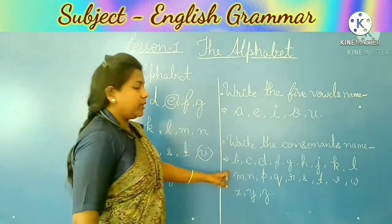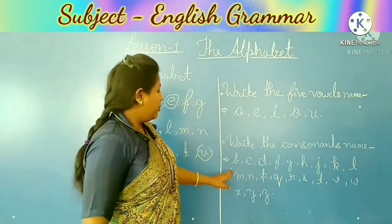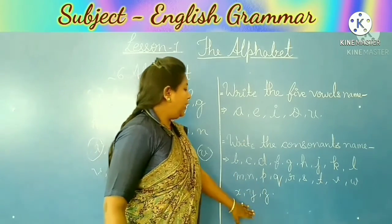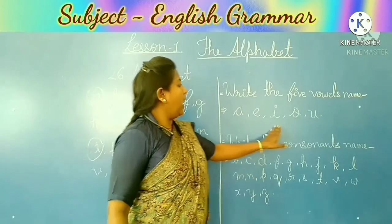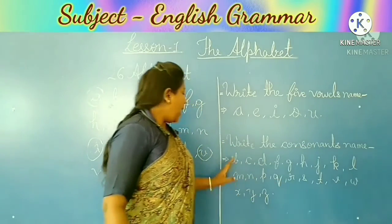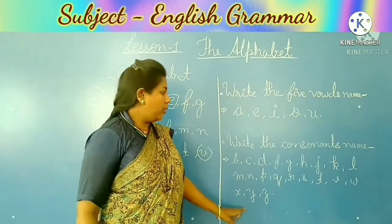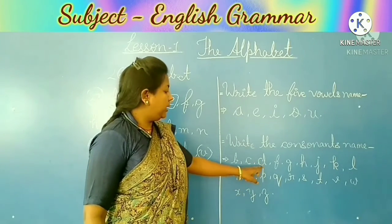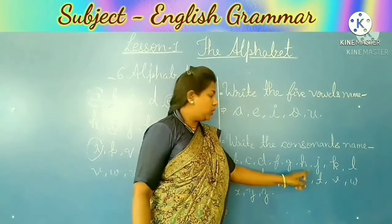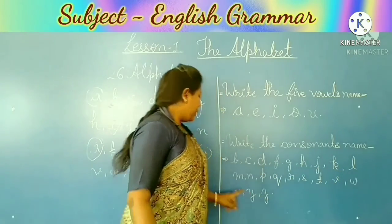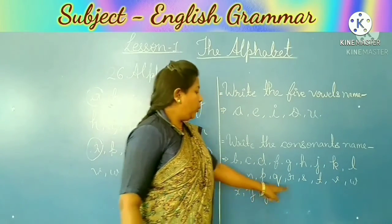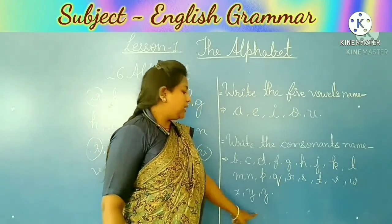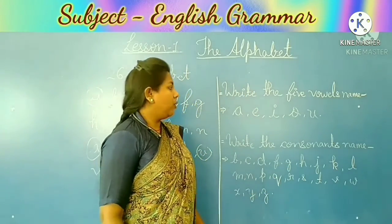And for consonants, look at the board — maine yahan pe already likha hua hai A to Z, lekin yahan se A, E, I, O, U missing hain. Baaki saare consonant yahan pe hain. Your consonants are: B, C, D, F, G, H, J, K, L, M, N, P, Q, R, S, T, V, W, X, Y, Z — these are your consonants.